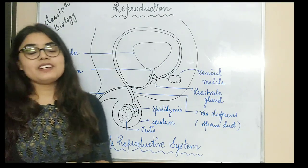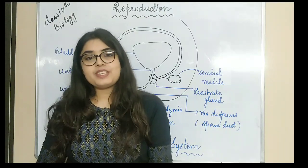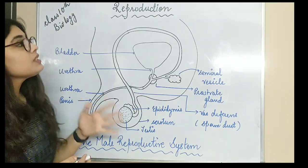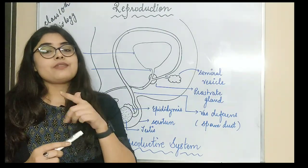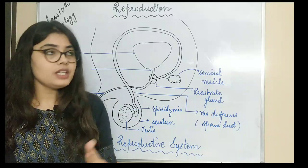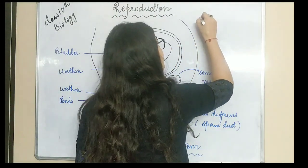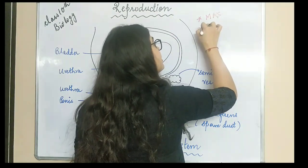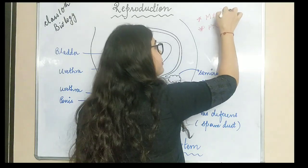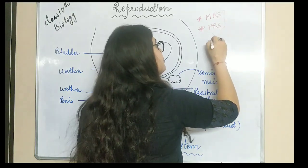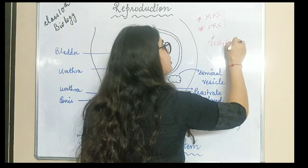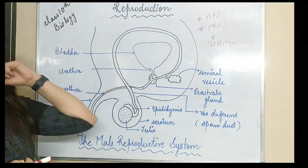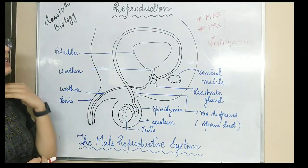Hey guys, welcome back to my channel. In this video we will be moving forward with the next topic, that is reproduction in animals. The first thing we'll be studying is their systems. Our main focus will be the male reproductive system and the female reproductive system, and after studying these two we will be studying how the fertilization process takes place — how the fusion of the male and female gametes happens.